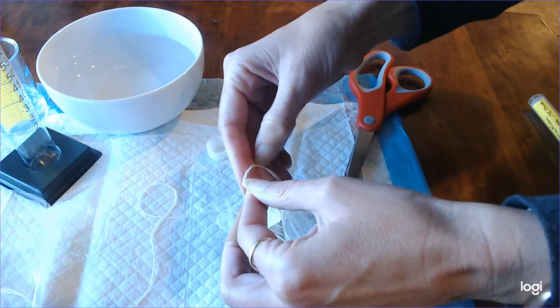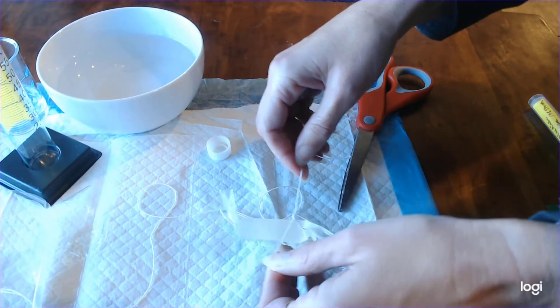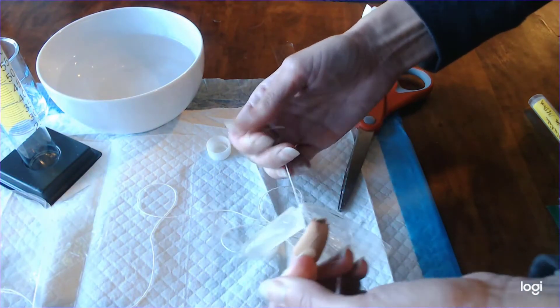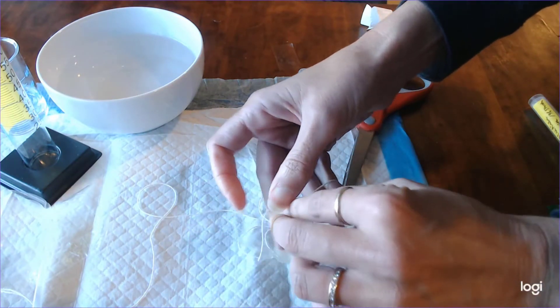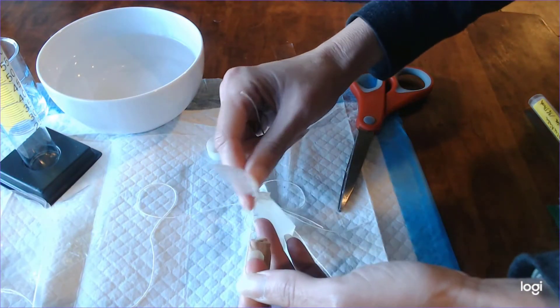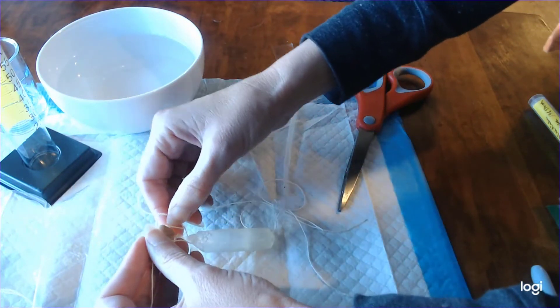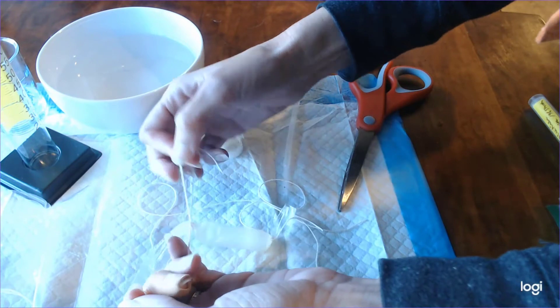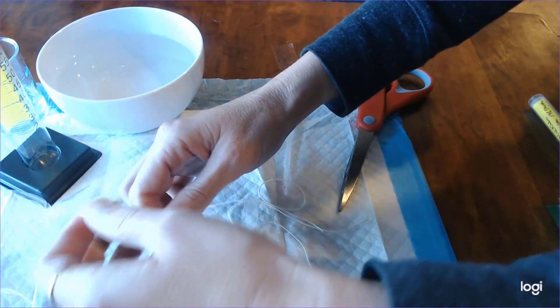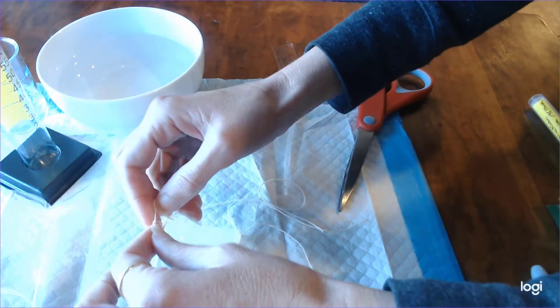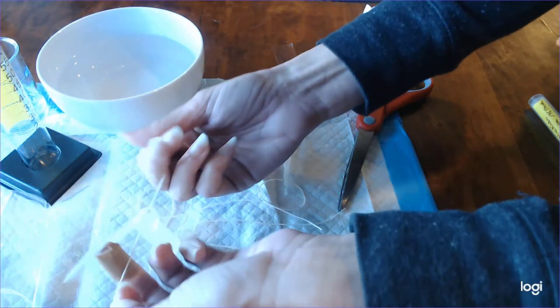So maybe a couple millimeters above where the solution ends because if water comes in you want to give the incoming fluid some room to expand so you don't want to tie it too too tightly. You want to make sure there's a little bit of play in that dialysis bag. You can kind of see where I'm tying, it's just a little bit above where the solution ends.